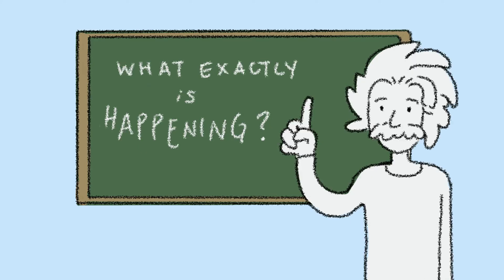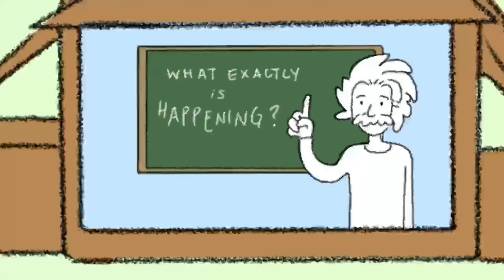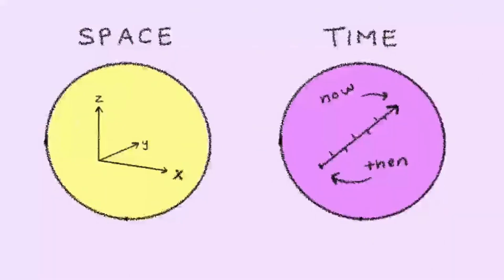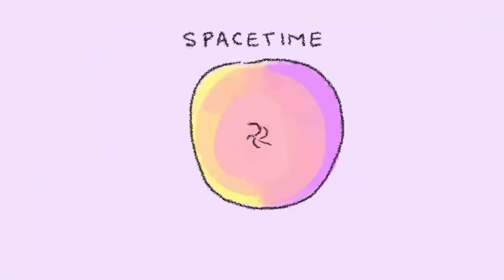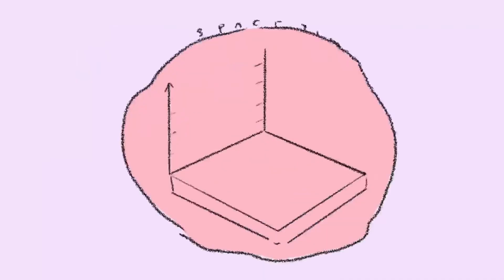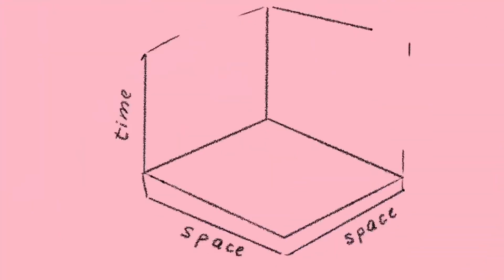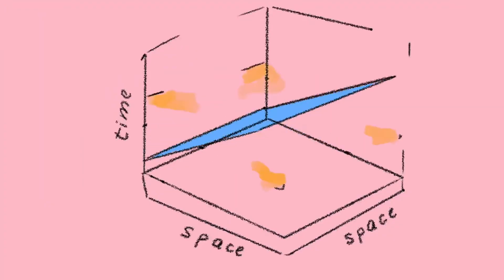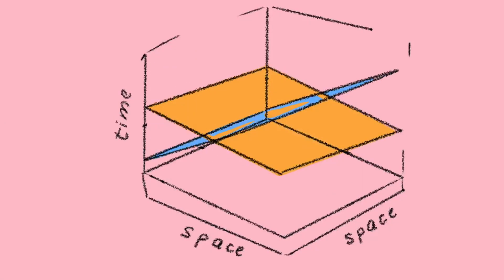To understand this, we have to shift our frame of mind outside the box. This whole time, we've been assuming that space and time are constant, individual ideas. But in reality, the three dimensions of space and one dimension of time are relative to one another. And depending on how you move through space, the way you experience time will also shift.